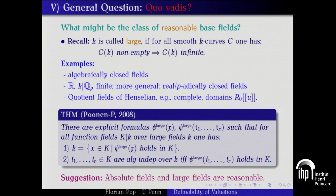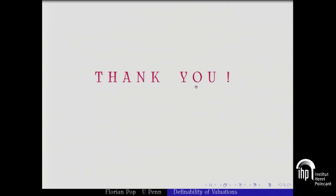Then, what might be the class of reasonable fields? Recall what is a large field: a field with the property that if it has a smooth point, it has infinitely many smooth points. Algebraically closed fields are large, real closed fields are large, p-adically closed fields, quotients of henselian fields, complete domains, and so on — the class is very huge. For these fields, with Poonen we proved that there is a predicate which defines the constants, and a predicate which defines algebraic independence. But this is where we have to stop.